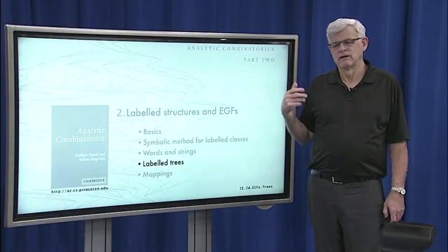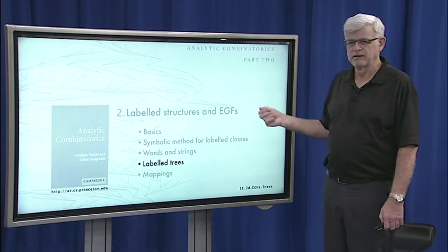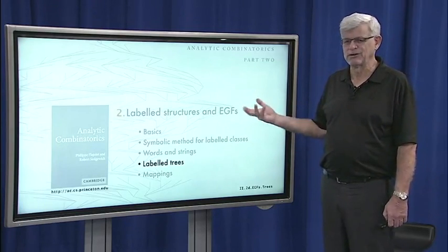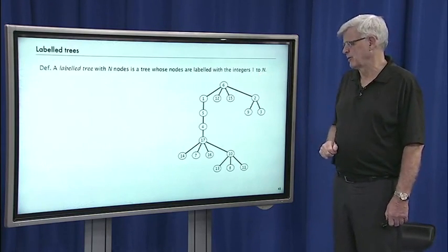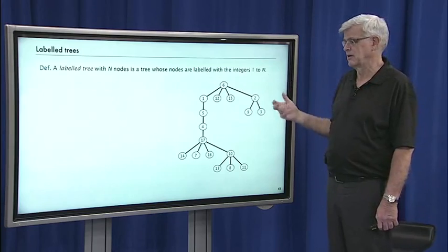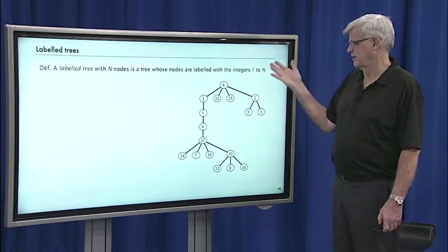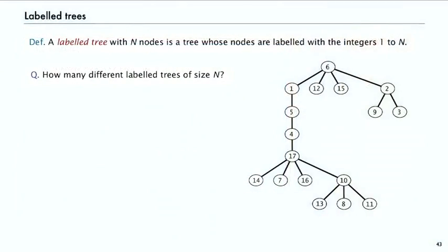Now we're going to look at constructions of labeled classes that involve trees. If you took part one, you want to pay more attention here, as this wasn't covered much in part one. A labeled tree is simply a tree with n nodes whose nodes are labeled with the integers one through n. You might want to know how many different labeled trees there are of size n, and there are all kinds of variations to consider, as we did with unlabeled trees.